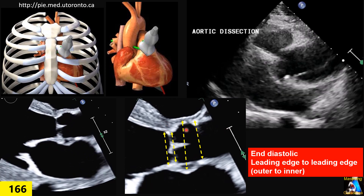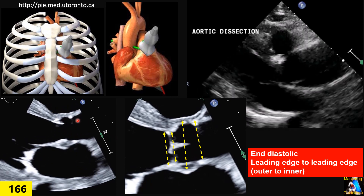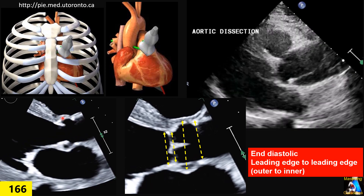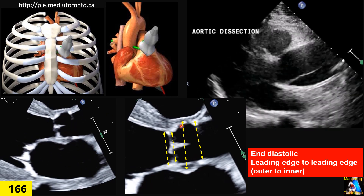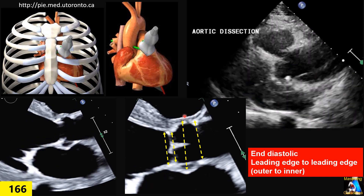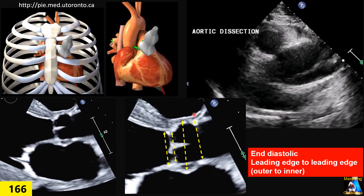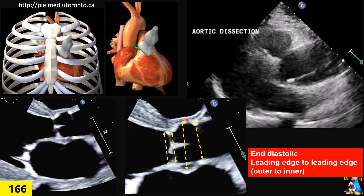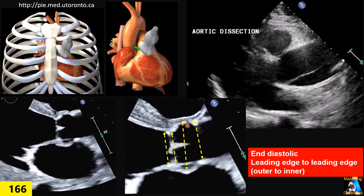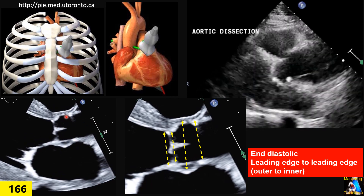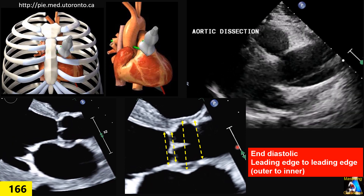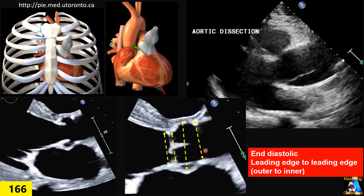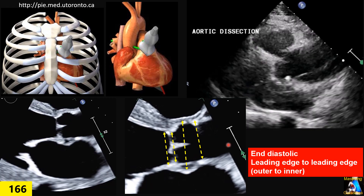A tip on measuring the sinus of Valsalva: go through the loop back and forth to confirm where the aortic wall is at the level of the sinus. You can follow it, and when you identify where the aortic wall is, place the caliper outer to inner. There are three layers visible: the RVOT, the connective tissue between the RVOT and the aortic wall. Using zoom mode makes it easier. Measure outer to inner at that level.